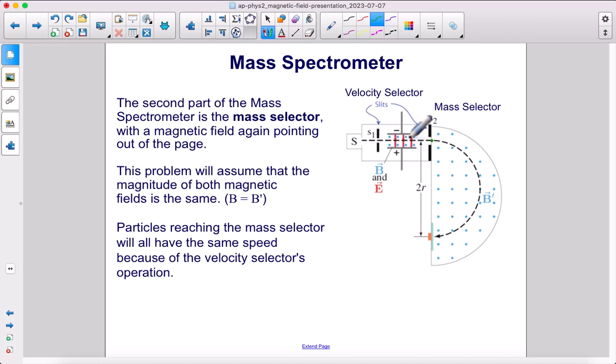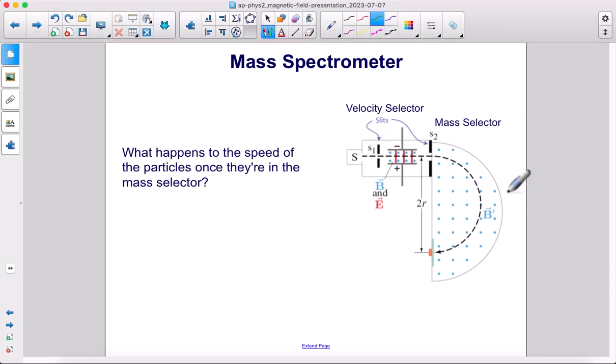Any particles that were going too fast or too slow would have already hit the walls here. They would have been deflected up or down, and therefore, they did not make it into the mass selector. What's going to happen to the speed of the particles once they're in the mass selector?